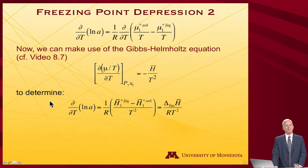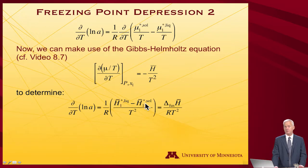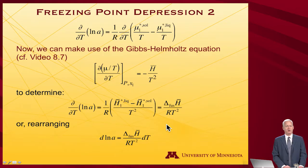Carrying through and applying that, the right-hand side becomes 1/R times the enthalpy of the pure liquid minus the enthalpy of the pure solid, all divided by T squared. That difference in enthalpy between the liquid and the solid is called the enthalpy of fusion. So I write it as the enthalpy of fusion divided by RT squared. Rearranging to put dT on the other side: d(log A) equals the heat of fusion divided by RT squared, times dT.